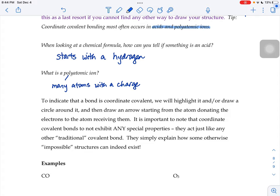It's important to note that coordinate covalent bonds don't exhibit any special properties at all. They act like any other traditional covalent bond. They just simply explain how some otherwise impossible structures can exist.